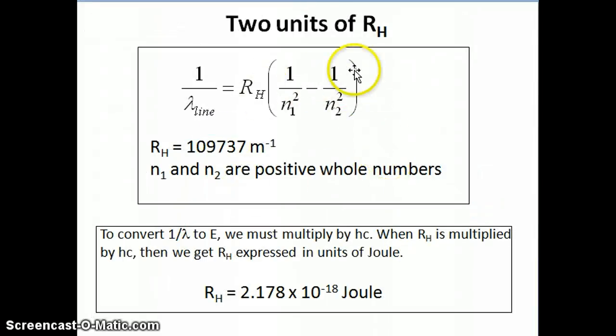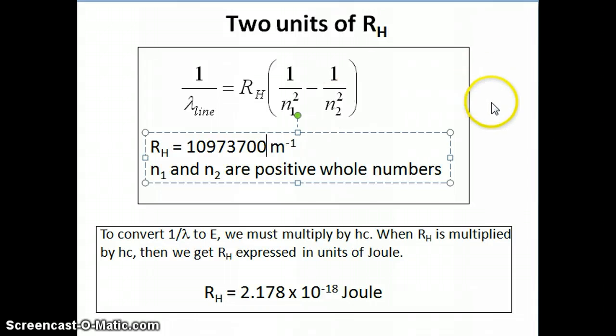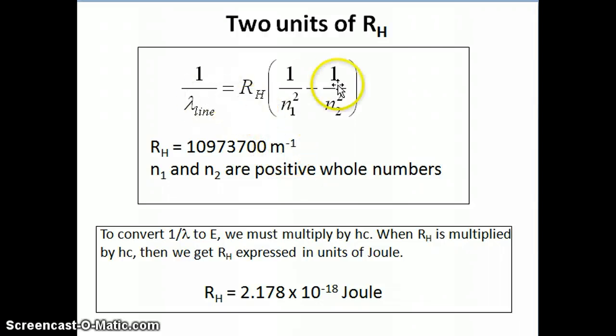Before we go through the example, I want to remind you that there are two units of RH that you can use, the Rydberg constant. One unit is 10973700 per meter. Remember that there's a typo there.